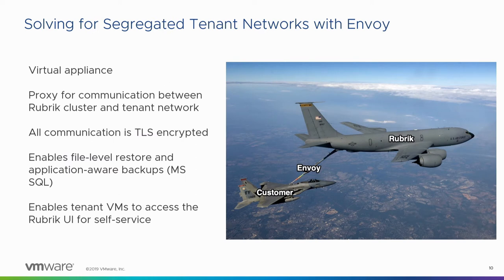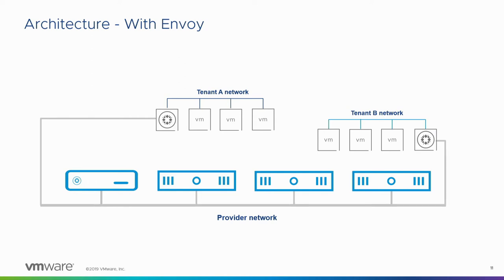We'll talk about Envoy in a second, but one of the things we announced earlier this year was a plug-in for vCloud Director, so you can protect and manage your workloads with Rubrik without ever leaving the vCloud Director console. Envoy is an add-on designed for service providers who have workloads connected to isolated networks. If the Rubrik cluster is connected to the provider network, and you have an isolated tenant network, Envoy solves that connectivity challenge between Rubrik and that isolated tenant workload.